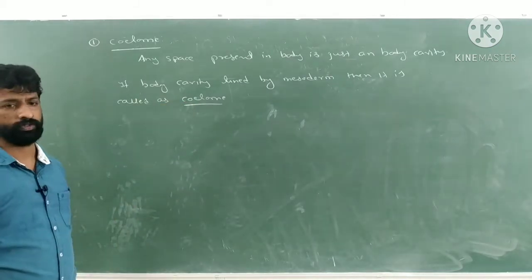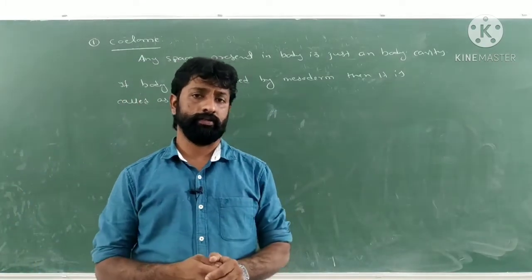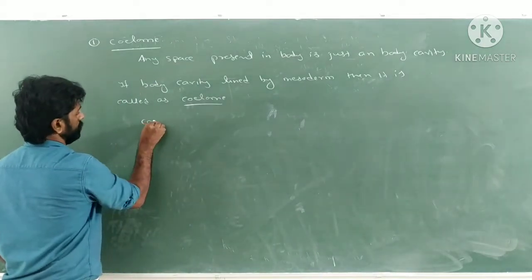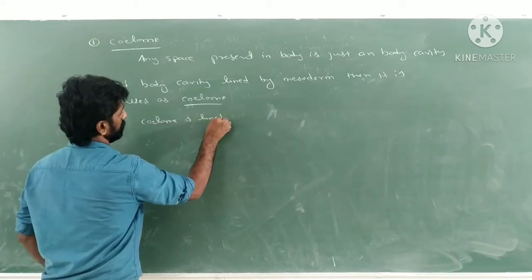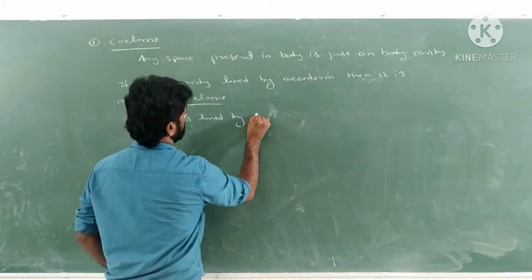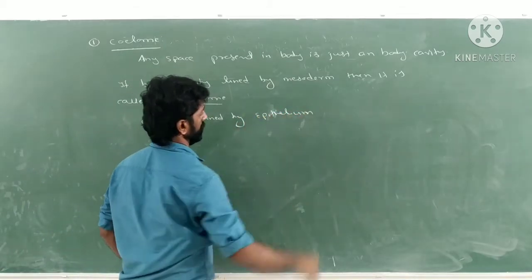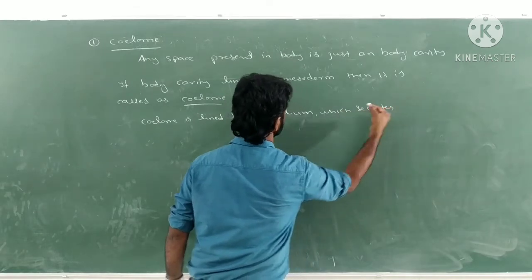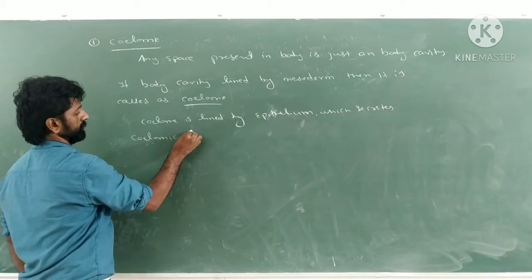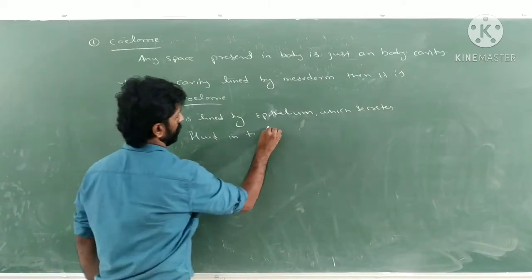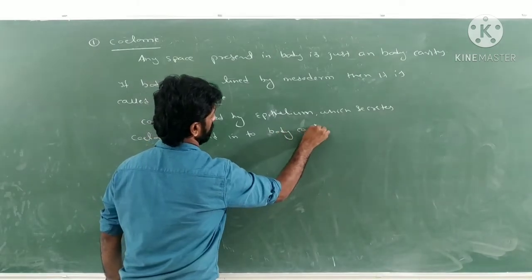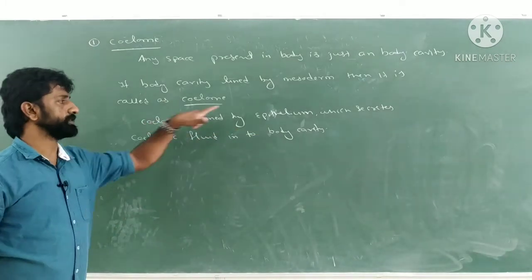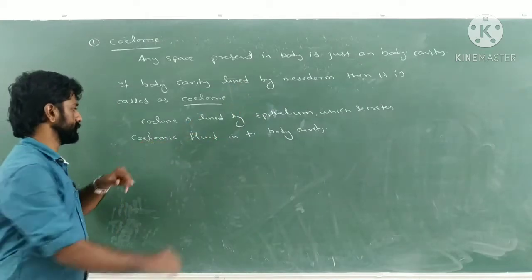The coelom is present as a body cavity between the outer body wall and inner gut wall, and it is lined by mesoderm. Such a body cavity is called the coelom. It is lined by epithelium called coelomic epithelium, which secretes fluid called coelomic fluid into the body cavity.